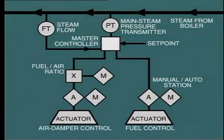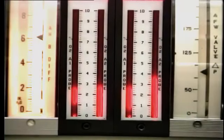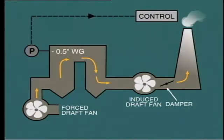A further improvement may be obtained by connecting the oxygen analyzer signal to automatically adjust the fuel-air ratio. This acts as a trimming device to precisely control the combustion air and bring the excess oxygen in the flue gas to the desired set point. Auto control of induced draft, where fitted, is not usually considered part of the combustion control system as it is operated by a separate dedicated control loop. The controlling parameter is measurement of furnace pressure — that is, negative pressure — with the controller set to maintain about minus 0.5 inches water gauge in the furnace, achieved by adjustment of the ID fan dampers.